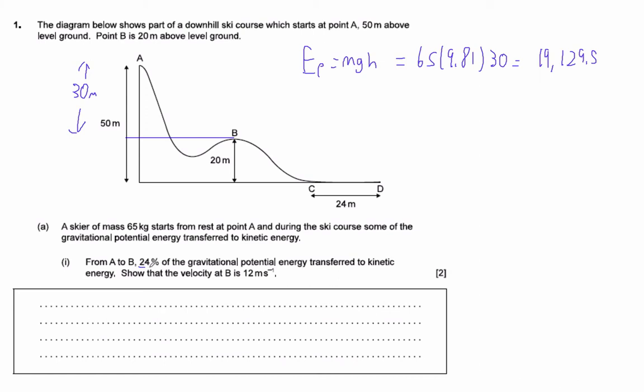But only 24% of that turns into kinetic. So you've got to multiply by 0.24 to figure out how much turns into kinetic. So times 0.24, and that's 4591 joules.